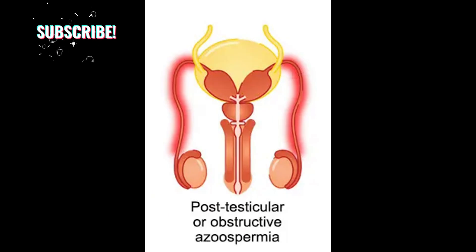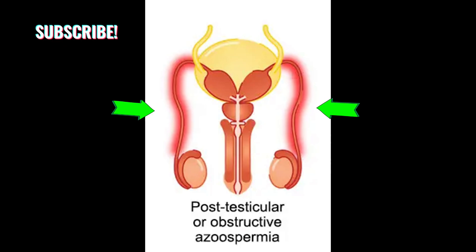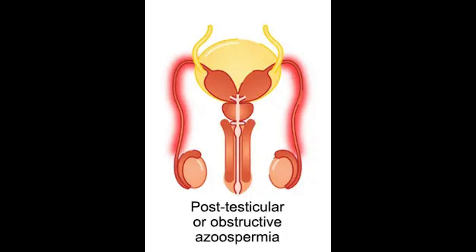The third cause is post-testicular. This is the obstructed type, caused by a problem in ejaculation due to obstruction of some sort in the reproductive tract. The obstruction may be anywhere in the epididymis or vas deferens tubes. This is the most important cause, accounting for about 40% of all cases of azoospermia.